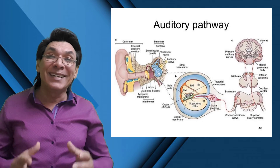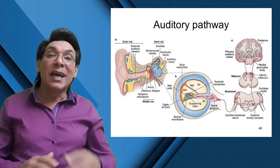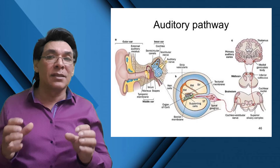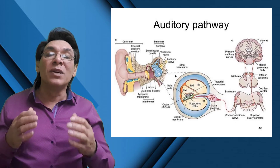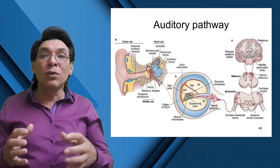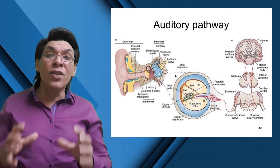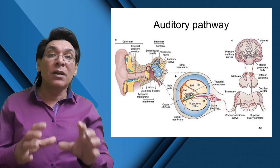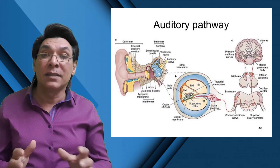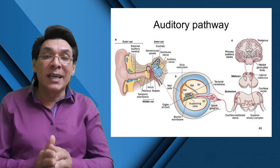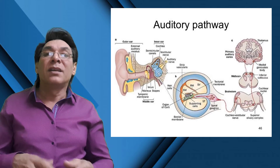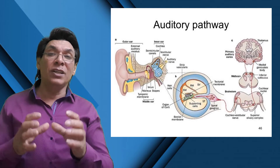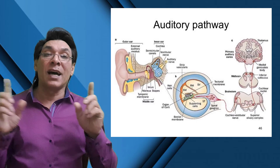The auditory pathway: vibrations travel to the basilar membrane, then hair receptor cells bend against the tectorial membrane. Calcium enters the receptor cells and neurotransmitter from the hair cells is released, stimulating nearby sensory fibers. Nerve impulses are carried along the cochlear branch of the vestibulocochlear nerve (cranial nerve 8) to the medulla oblongata, where fibers cross over, then to the thalamus, then to the temporal cortex. Impulses from each ear are interpreted on both sides of the brain.